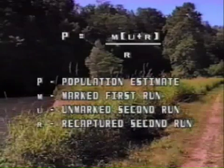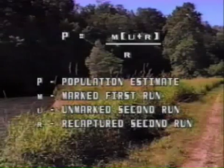P, which stands for the population size you're trying to estimate, is equal to M. M stands for the number of marked organisms that you catch on the first run — that is the first time through trapping or electrofishing. P is equal to M times the quantity U plus R, divided by R. U refers to unmarked organisms that you catch on the second run, and R refers to the recaptured organisms — those that were marked on the first run. So the full formula is: P = M × (U + R) / R.